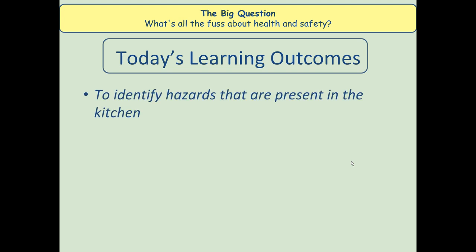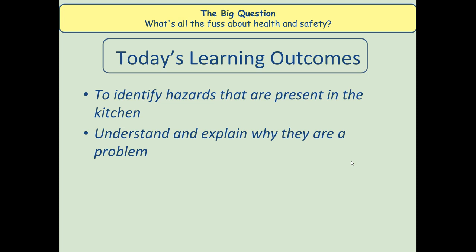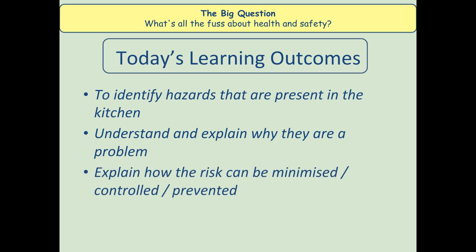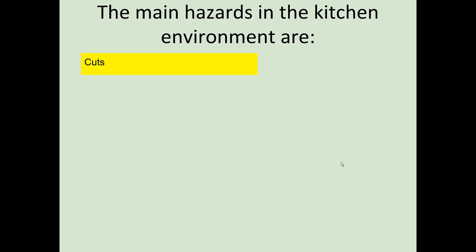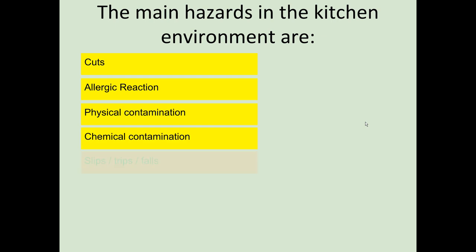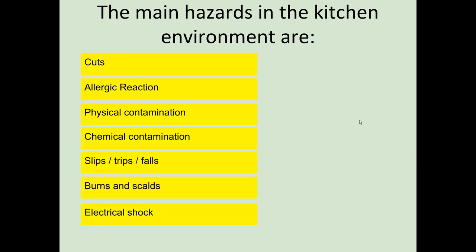Today's learning outcomes: by watching this video I want you to know what hazards are present in the kitchen, be able to understand and explain why they're a problem, and be able to explain how the risks of these hazards can be minimized or prevented by putting controls in place. The main hazards in the kitchen environment are: cuts, allergic reactions, physical contamination, chemical contamination, slips, trips and falls, burns and scalds, and electrical shock and entanglement.